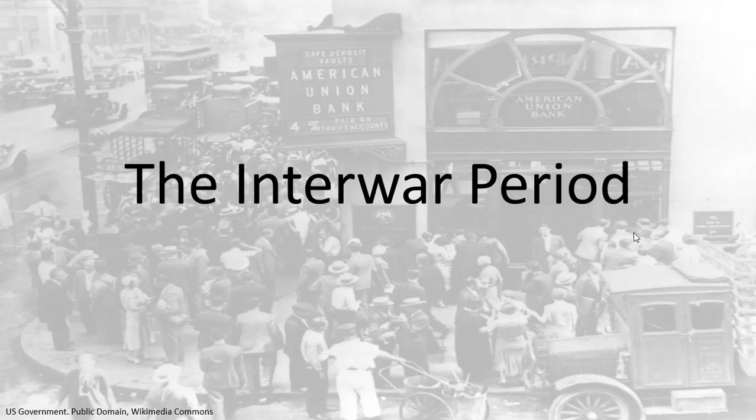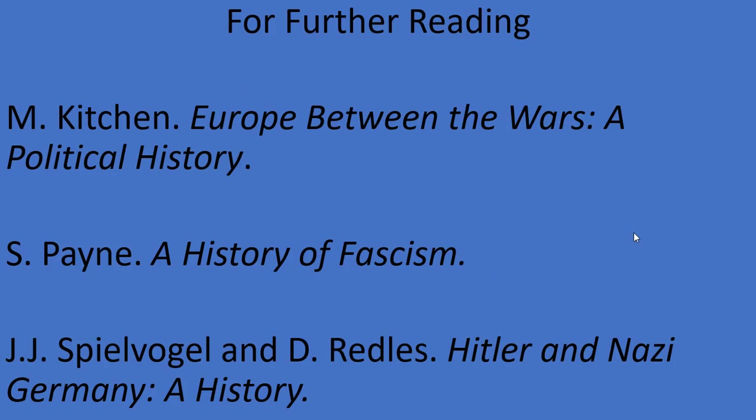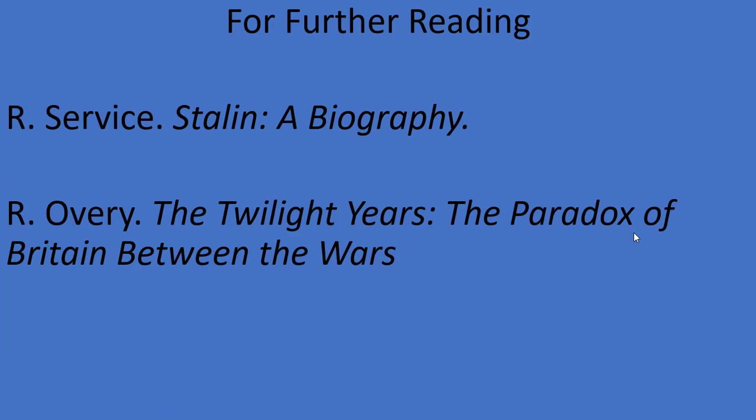That does it for our look at the interwar period. Today, we looked at the rise of Stalin in Russia, Mussolini in Italy, and Hitler in Germany. We also took a look at what was happening in democratic nations like the U.S., and what prompted the Great Depression. If you have any questions about this lesson, please leave a comment below, or email me if you're a student. If you'd like more information on the topics covered in today's presentation, here's a short list of books you can check out to get started. Also, please like and share this video, and subscribe to my channel. Lastly, I'd prefer not to see vile arguments in my comment section, so keep it clean and respectful, please. Thanks for watching everyone, and I'll see you all again soon.